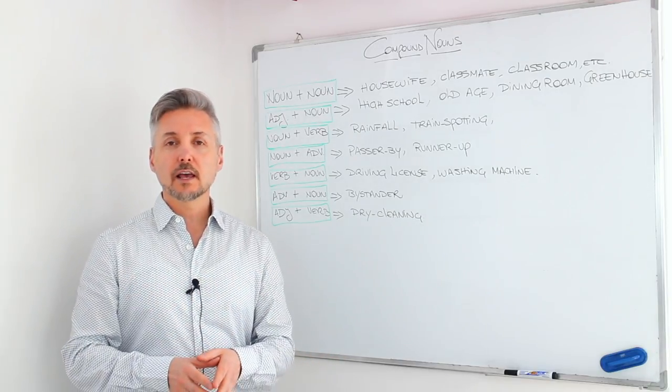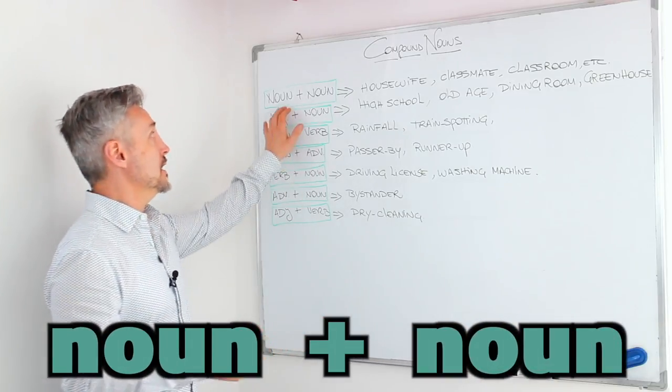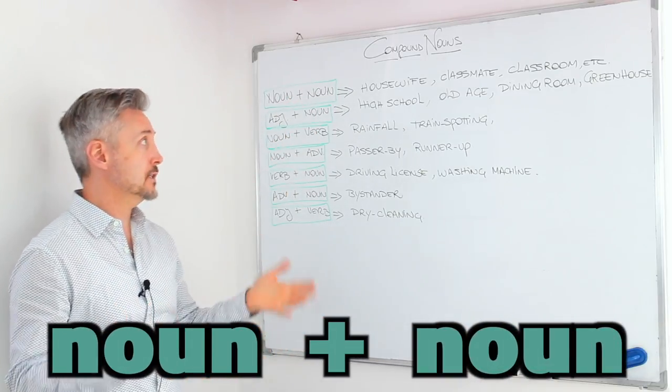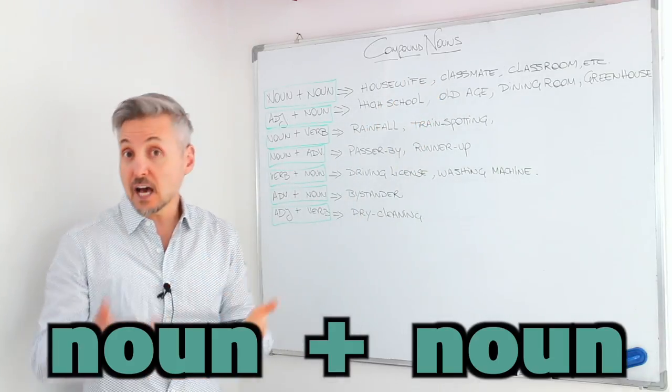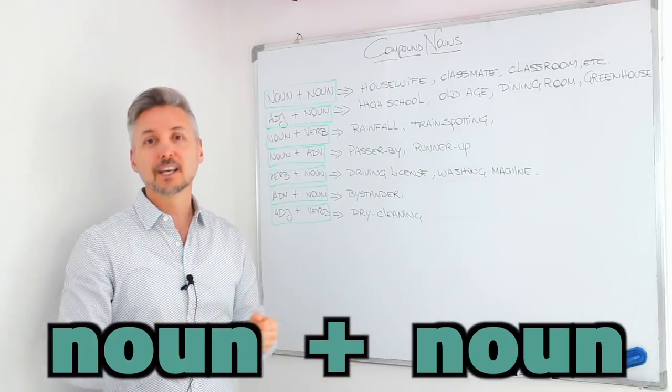Compound nouns are made of two words usually, but sometimes more. They're made up of noun plus noun. For example, housewife, classmate, classroom.